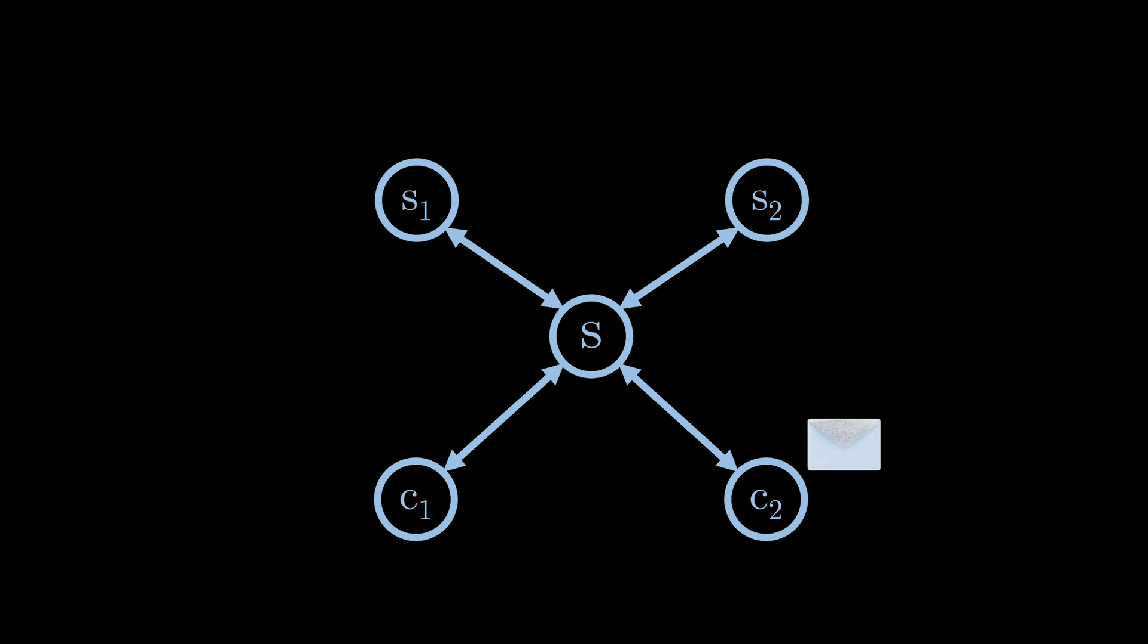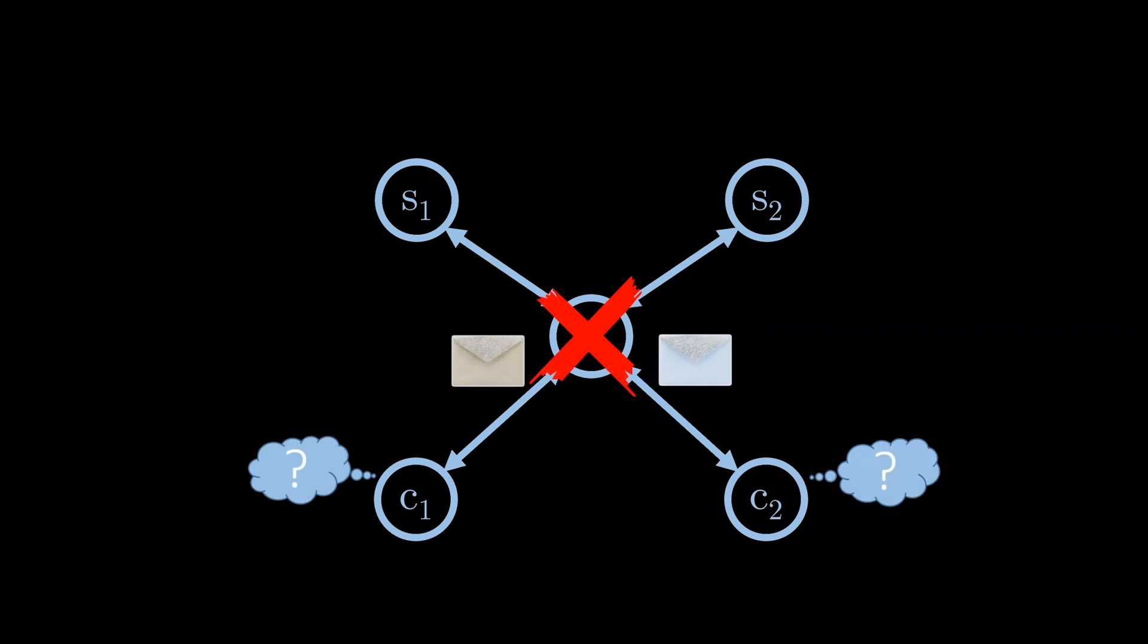This simple approach has an obvious disadvantage. The serializer is a single point of failure. If the serializer is not responsive, the whole system stops functioning. How can we solve this problem? Again, you are invited to pause the video and think about this problem for a moment.